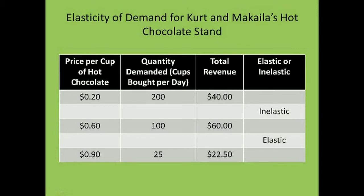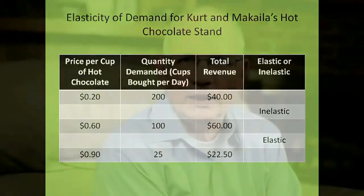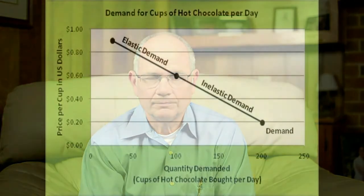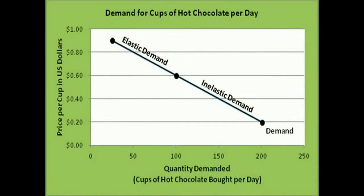The elasticity of demand is said to be inelastic between these prices. However, we saw that revenues actually dropped to $22.50 when they raised their price to 90 cents a cup. Kurt was right that 90 cents is just too much to pay for a cup of hot chocolate. When revenues decrease as a result of a price increase, the elasticity of demand is said to be elastic. It's really interesting to note that the same product — in this case hot chocolate — is elastic at higher prices and inelastic at lower prices. This is true of most goods and services.